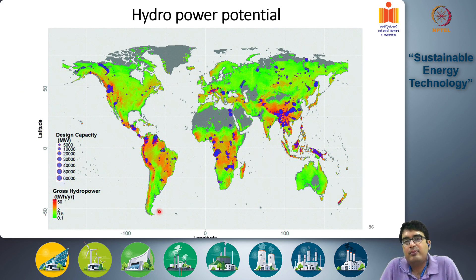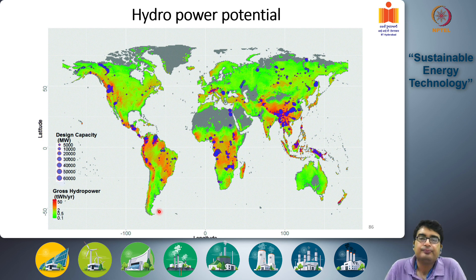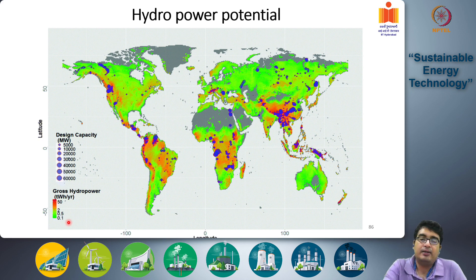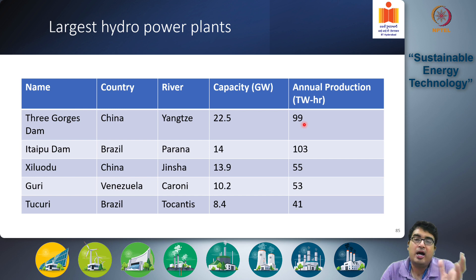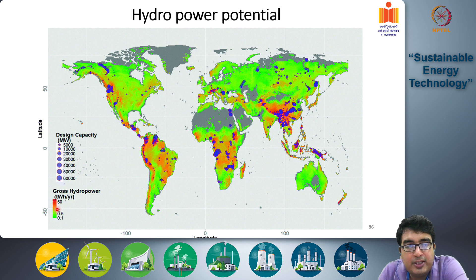This figure, taken from a research paper, shows the hydropower potential that exists throughout the world, giving an idea of where future large growth in hydroelectric power generation systems is likely. The gross hydropower potential is shown in TWh annual potential. Values range from red (highest, around 50 TWh or more) to green (lowest, around 0.1 TWh) on a logarithmic scale, so orange is around 20, then 50, then 100. Also shown are existing hydropower plants already installed, with their design capacity in megawatts — 1 gigawatt equals 1000 megawatts.